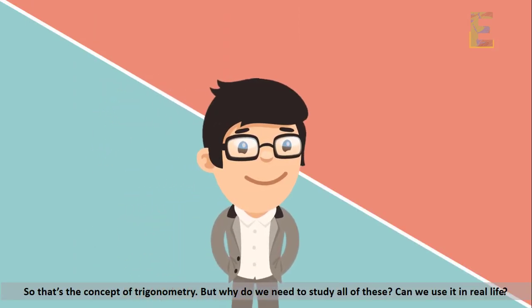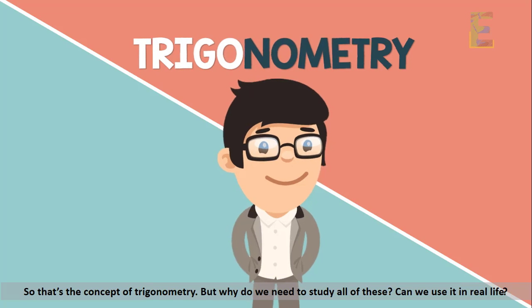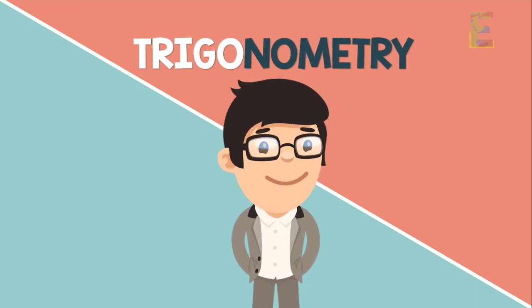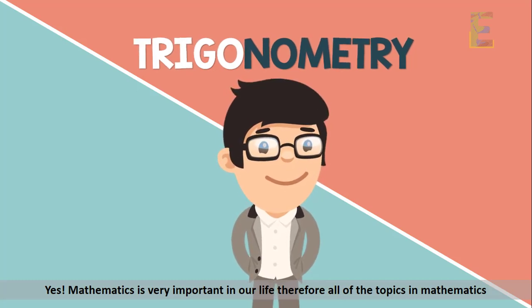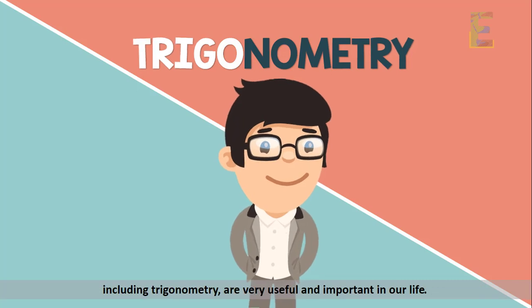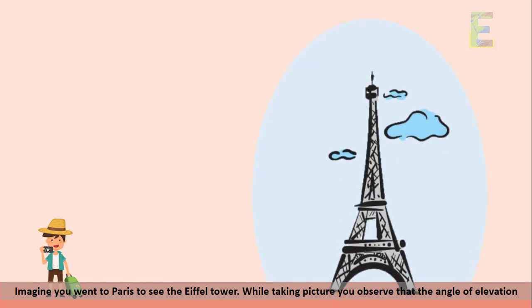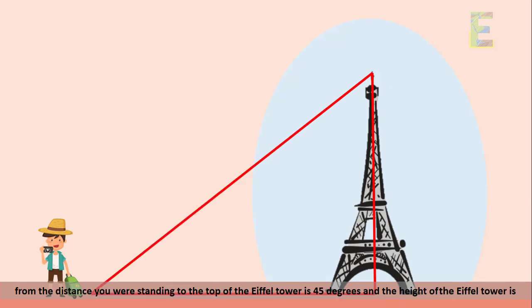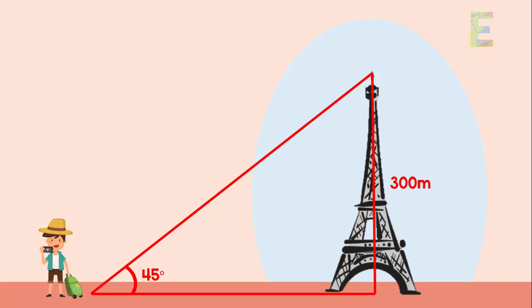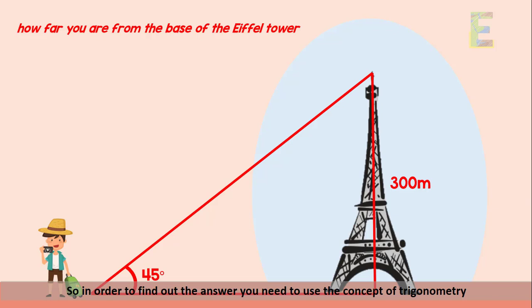So that's the concept of trigonometry — but why do we need to study it? Can we use it in real life? Of course! Mathematics is very important in our life, and trigonometry is no exception. Let's have a real-life example. Imagine you went to Paris to see the Eiffel Tower. While taking a picture, you observe that the angle of elevation from where you're standing to the top of the Eiffel Tower is 45 degrees, and the height of the Eiffel Tower is 300 meters. You want to find how far you are from the base. Let x denote your distance from the base.